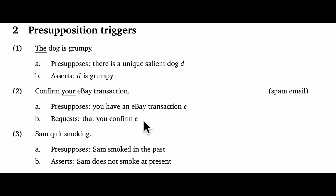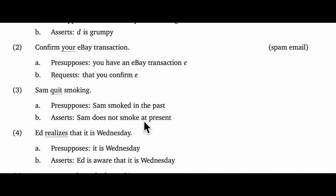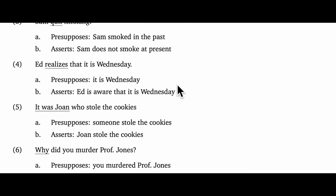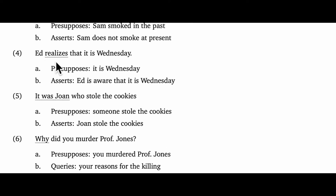This is effective because if you happen to have an eBay transaction, it seems like a normal sort of request; and if you don't have one, you might still accommodate that you do and then do something that makes the spammer happy. The verb "quit" is a presupposition trigger: in "Sam quit smoking," we have a presupposition that Sam smoked in the past and an assertion that Sam does not smoke at present. The clause-embedding verb "realize" also seems to be a presupposition trigger: "Ed realizes that it is Wednesday" presupposes that it's Wednesday and asserts that Ed is aware of this.